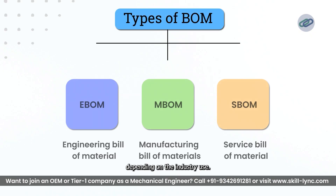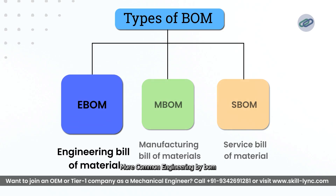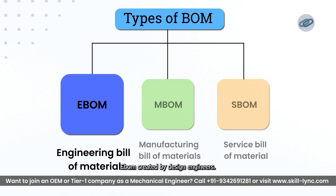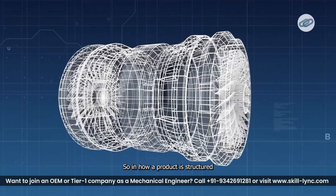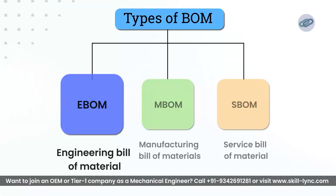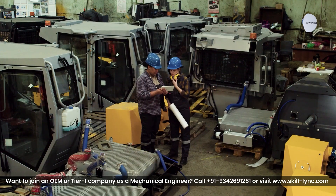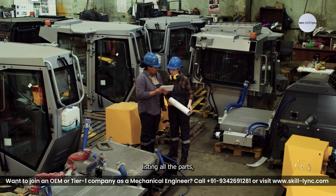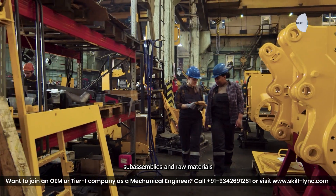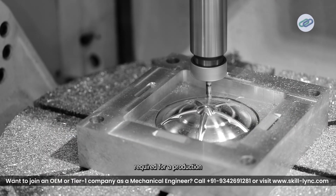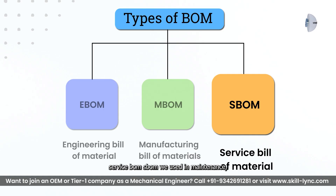There are different types of Bill of Materials depending on the industry use. The most common is the Engineering BOM (EBOM), created by design engineers showing how a product is structured in CAD models. Next would be the Manufacturing BOM (MBOM), used on the factory floor, listing all the parts, sub-assemblies, and raw materials required for production.